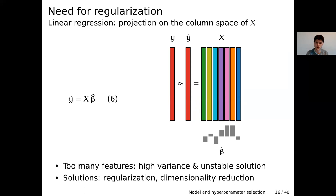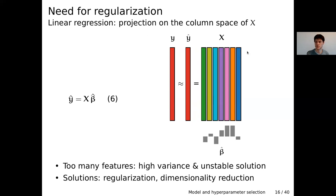This means we cannot identify the best coefficients beta, since many solutions give perfect prediction on training data. We have high variance in our coefficient estimates, which may yield excellent training performance but very poor performance on new examples — called overfitting. We may also have numerical stability problems and convergence issues in the optimization, plus an important computational and memory cost. Ways to deal with this are regularization — adding constraints or penalties on beta — or dimensionality reduction, which tries to reduce the number of columns in X so we have fewer model parameters.